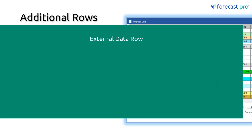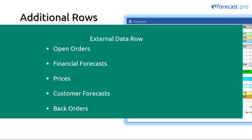Next, we'll look at the external data rows. With external data rows, these are rows of information that do not directly affect the final forecast, but that I want to compare side by side with my forecast, both in the override grid as well as in the graph. Common types of external data include open orders, a financial forecast or annual plan from finance, actual prices over time, customer forecasts from sales, and back orders.